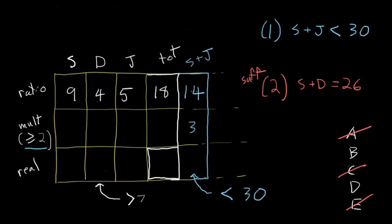Could it be 3? Well, 14 times 3 is 42, and that is not less than 30, so we can't have 3, and we can't have something bigger than 3. The only value that works here is 2.